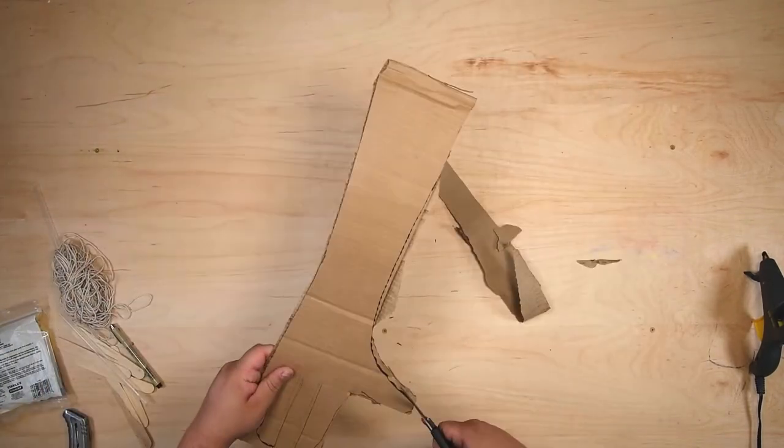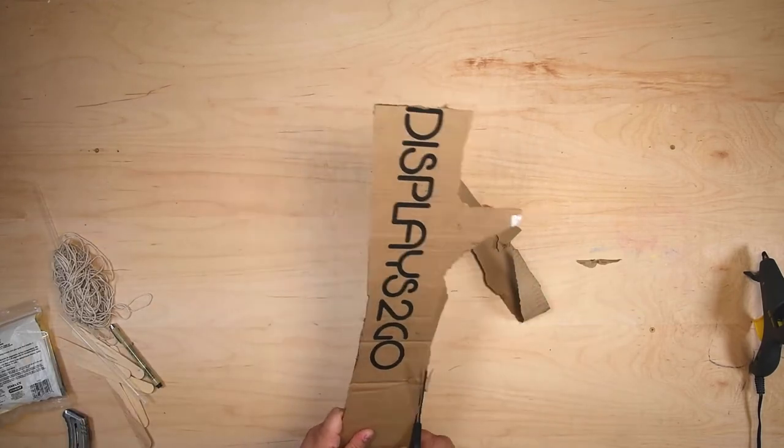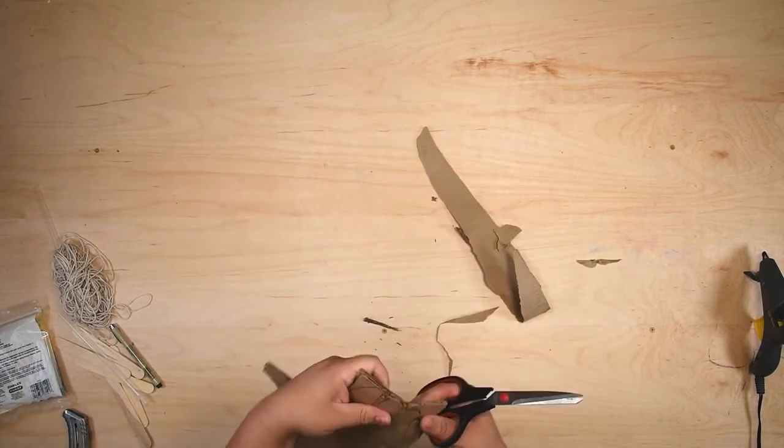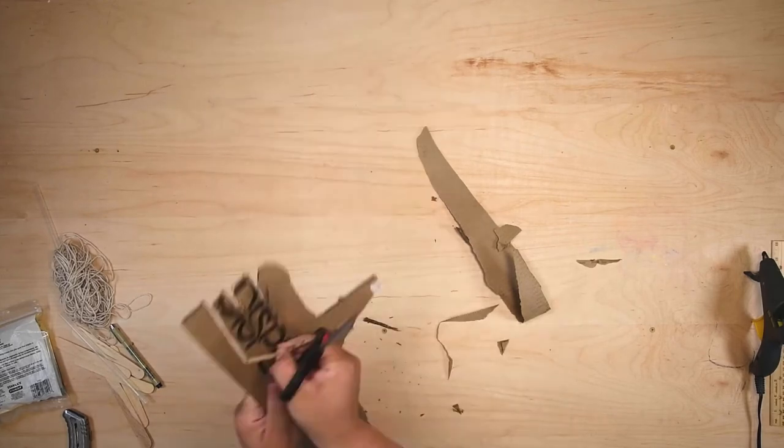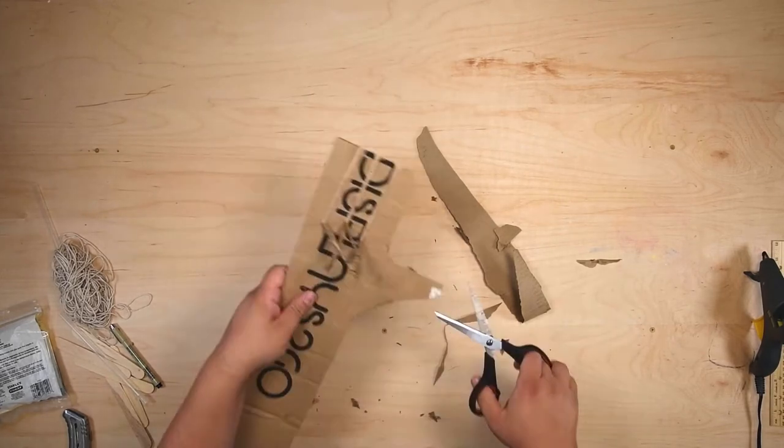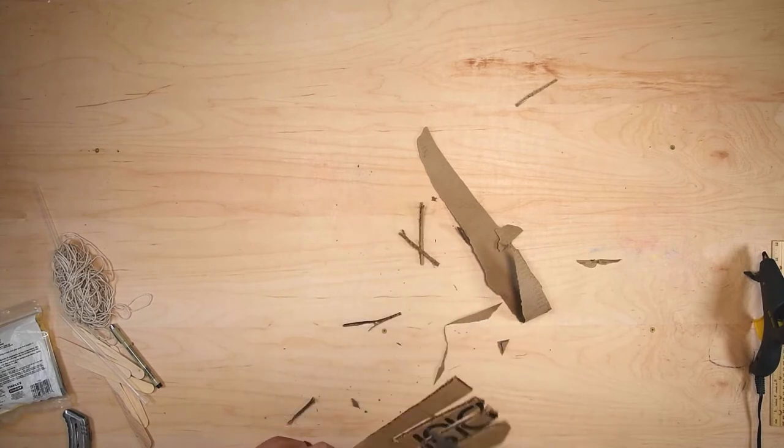And as you trim it up and kind of get it looking a little bit nicer, you may need to remove a little bit of extra cardboard from between each finger, just because that's going to allow each one to move a little better and keep them from bumping into each other, just like your regular fingers.